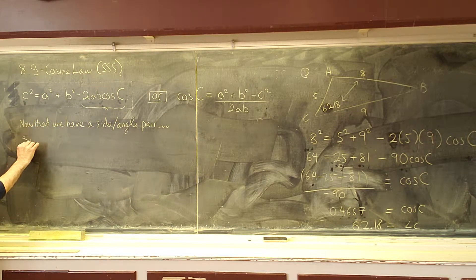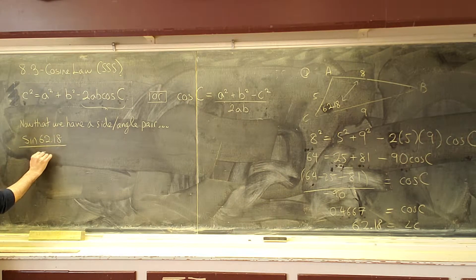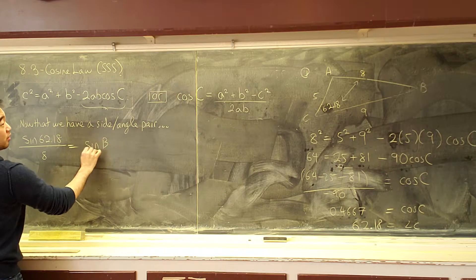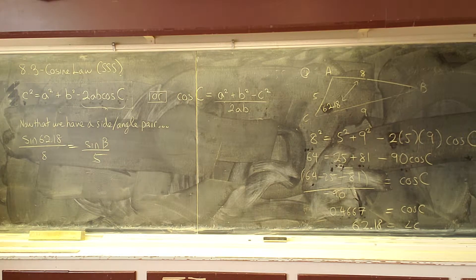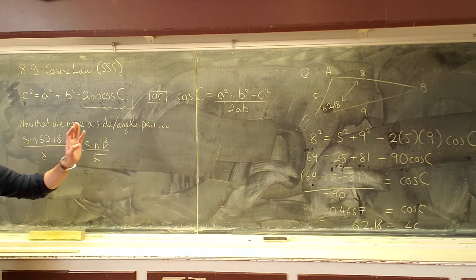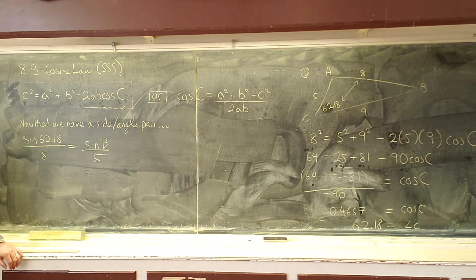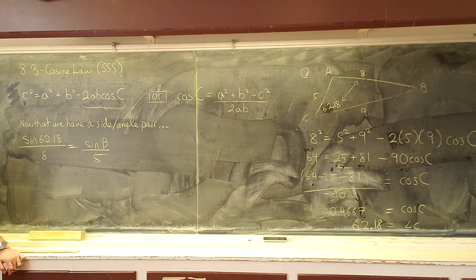We now have sine of 62.18 divided by 8, so sine of angle B over 5. And so, after we do the new formula once, we go back to our old stuff and it still helps us. We cannot package this now. Let's try it out.